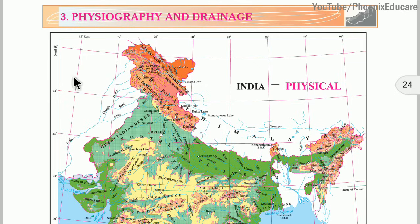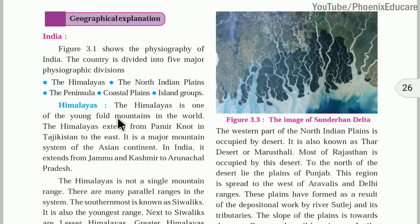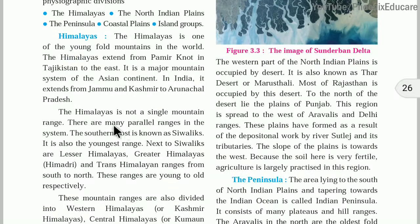The Himalayas act like an arc from Jammu Kashmir to Arunachal Pradesh. They are not a single mountain range but consist of many parallel ranges. The southernmost and youngest range is the Shivalik. Above that are the Lesser Himalayas, and the tallest range is the Greater Himalayas, also called Himadri. Above the Greater Himalayas, we have the Trans-Himalayas, of which the Karakoram ranges are a part. From south to north, the ranges go from young to old.